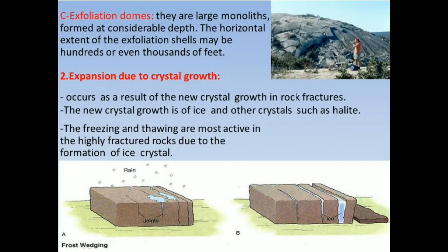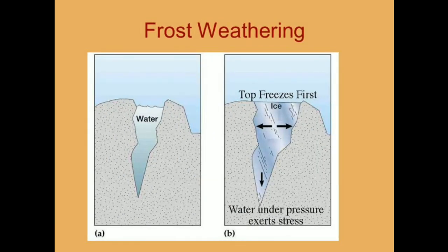The third important type of physical weathering is due to crystal growth, or we can say freezing and frost wedging. It is a kind of mechanical weathering caused by the action of frost and ice. Water expands when it freezes, and repeated cycles of freezing slowly weaken the integrity of cracked rock. It is mostly effective at high elevations where the temperature is low, especially in polar areas.